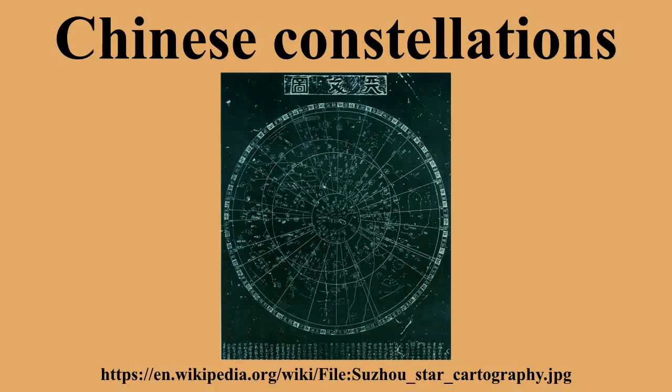Ancient Chinese astronomers designated names to visible stars systematically, roughly more than 1,000 years before Johann Bayer did it in a similar way. Every star is assigned to an asterism, then a number is given to the individual stars within that asterism. Therefore, a star is designated as asterism name plus number. The numbering of stars in an asterism is not based on apparent magnitude but rather on position within the asterism. For example, Altair is named in Chinese as the second star of the drum at the river.